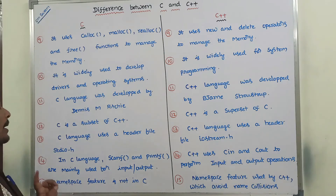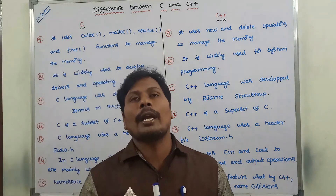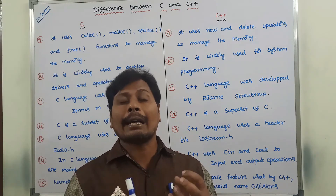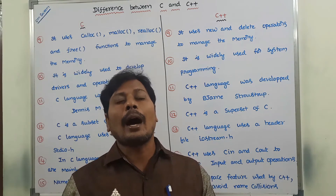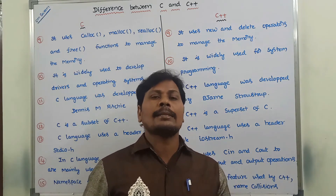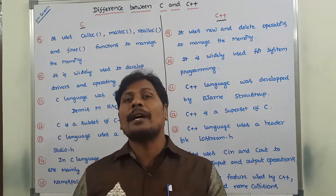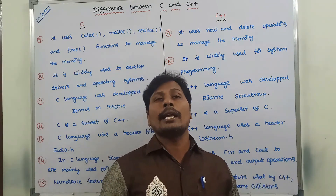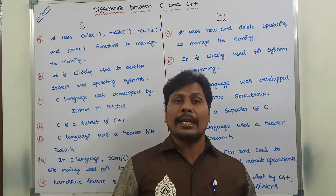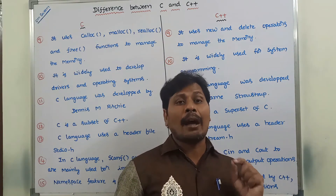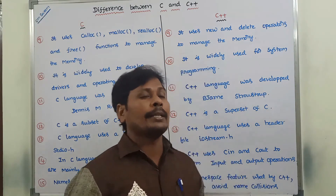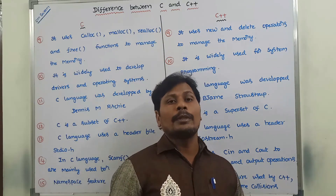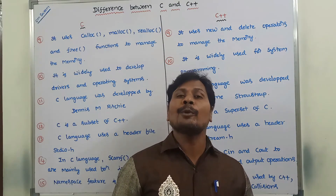The namespace feature is not allowed in C language. The namespace feature groups classes, objects, and functions under a single name. Whatever classes, objects, functions, and methods we use are grouped together under a single name — that is called a namespace. In C++ language, the namespace feature is allowed to avoid name collisions.